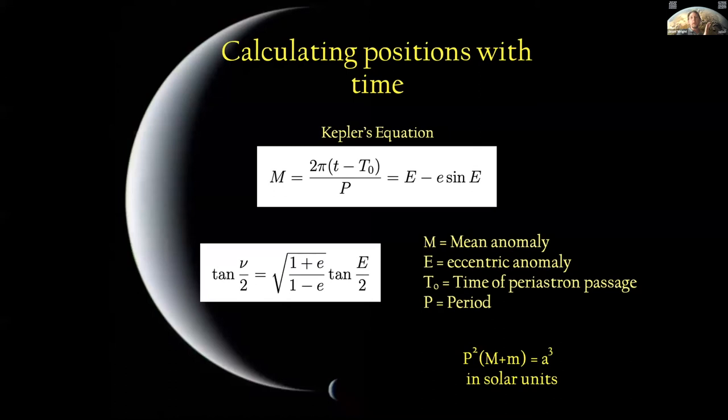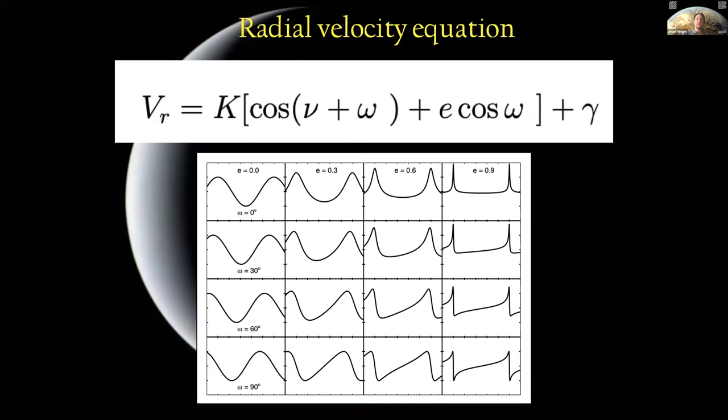This means that your model needs to know the time of periastron passage and the period so that you can do this conversion. We wanted to get the size of the orbit, the semi-major axis of the orbit from the radial velocity curve, and we do that through the period. This is where the period enters the model. At the bottom there we have Kepler's third law which connects the period that we measure to the semi-major axis via the masses of the star and the planet. The period squared in years times the sum of the masses measured in solar masses is equal to the semi-major axis cubed in astronomical units. We've now learned how to turn time into a true anomaly. Given some orbital parameters, what does it look like? This is your model.